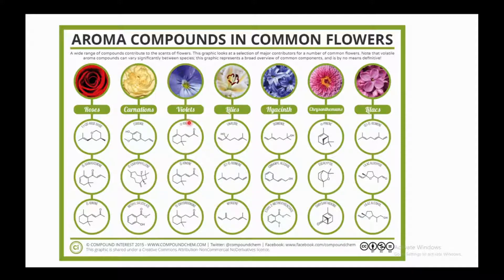Lilies are one of the most famous flowers around the world. They contain three major organic chemistry compounds. First is linalool, having an acyclic structure with no ring, two double bonds, and one OH group. Second is beta-ocimene, having a three-double-bond alkene-type structure where two double bonds are conjugated and in resonance with each other. Last is myrcene, a very famous molecule present in most perfumes, which gives them a beautiful fragrance.